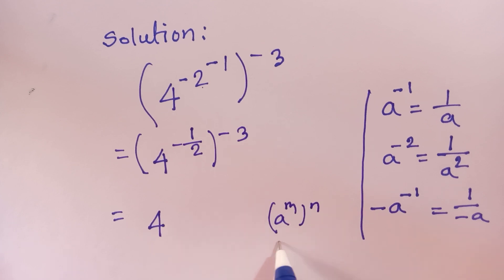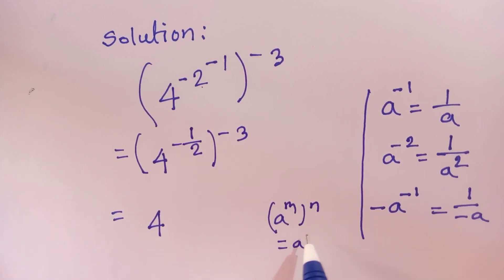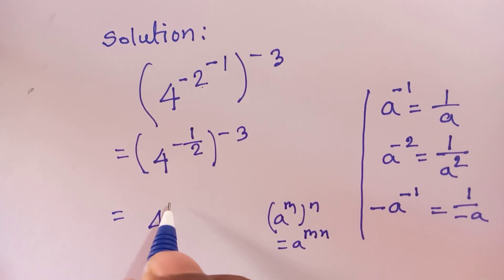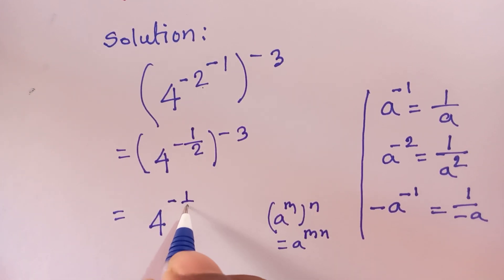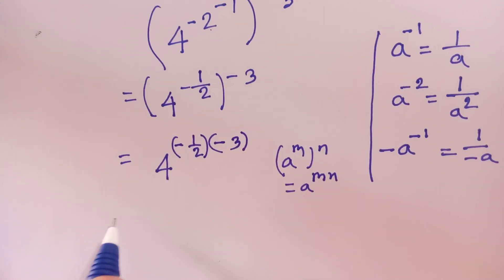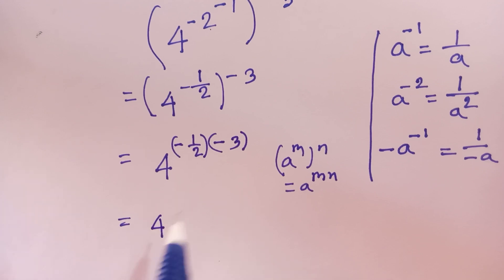is equal to a^(m times n). So according to this formula we can write in this case 4^(-1/2 times -3). Now 4^...